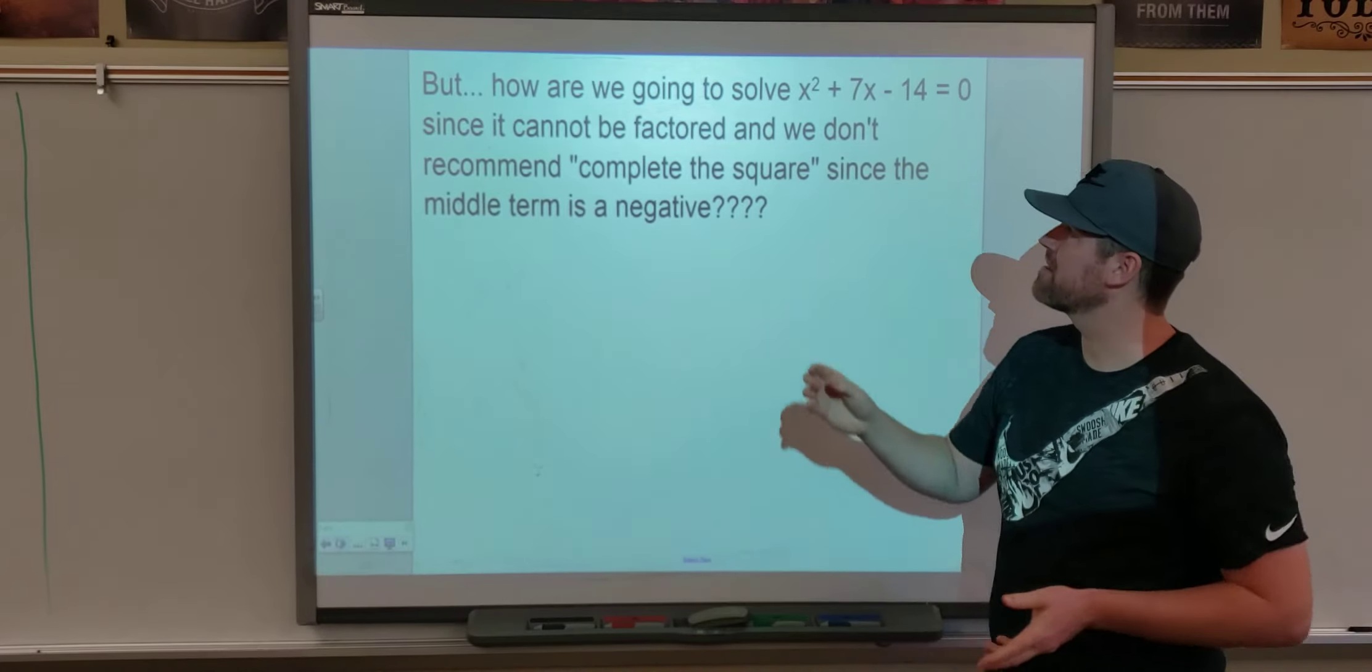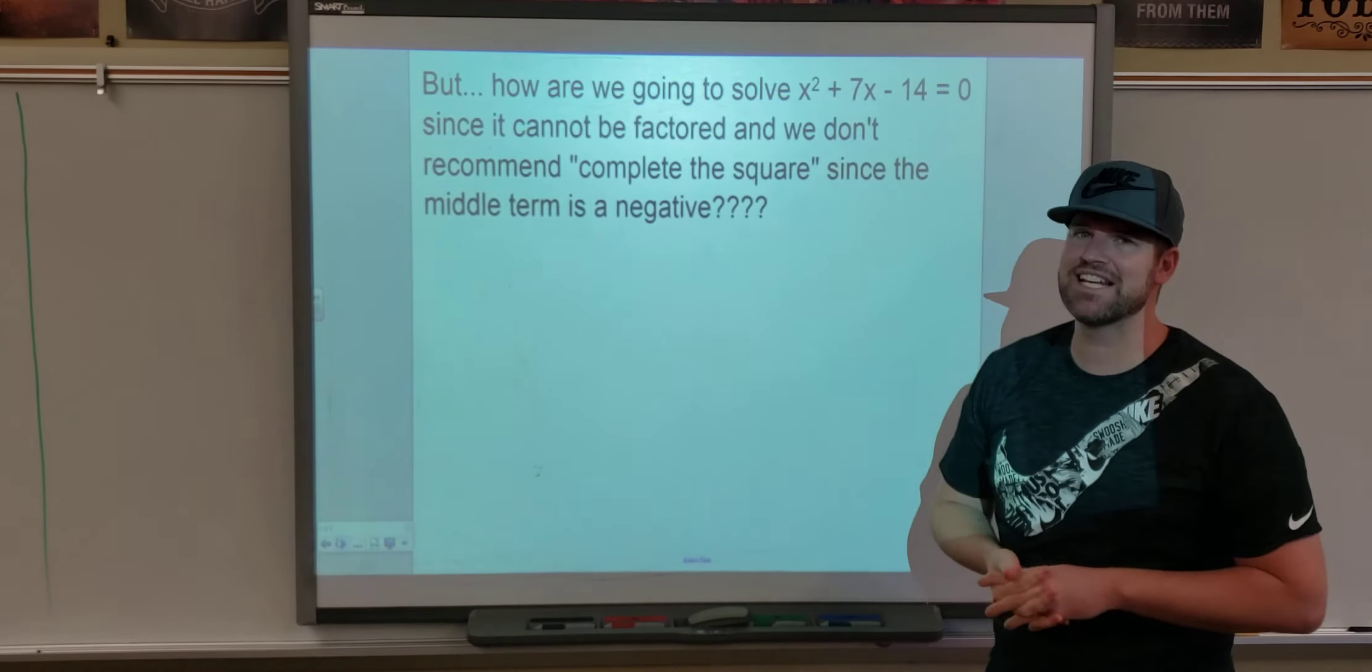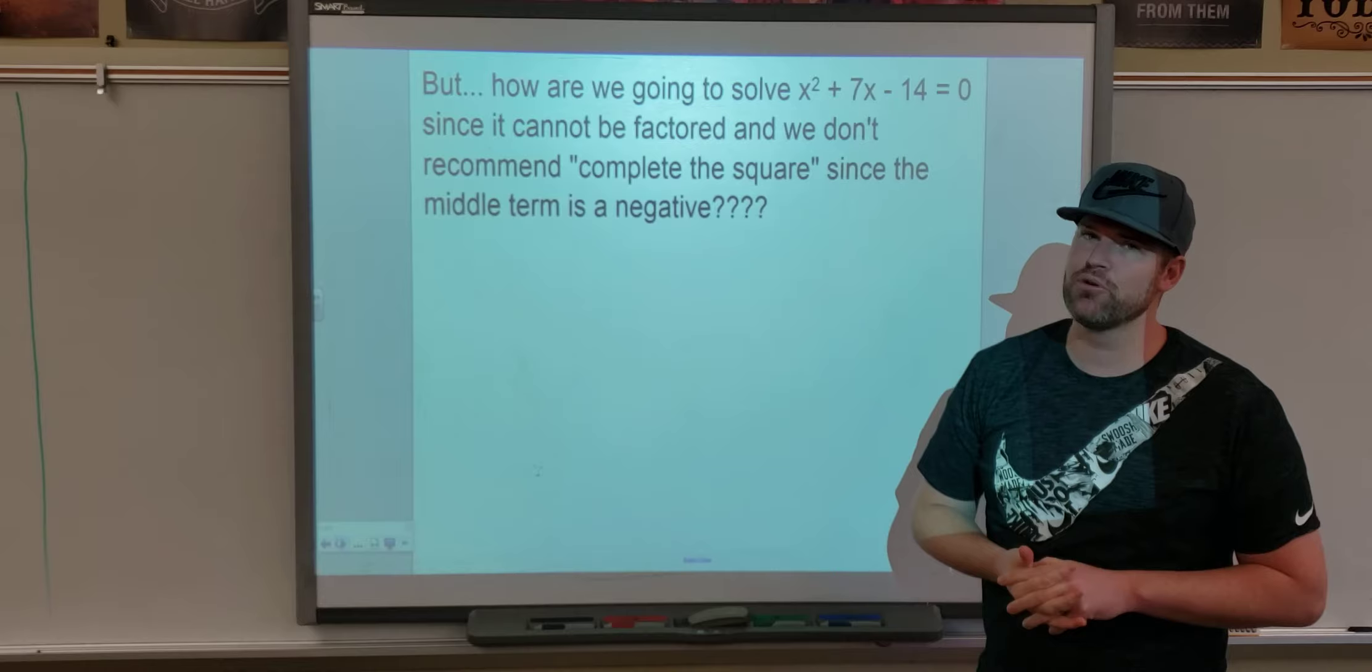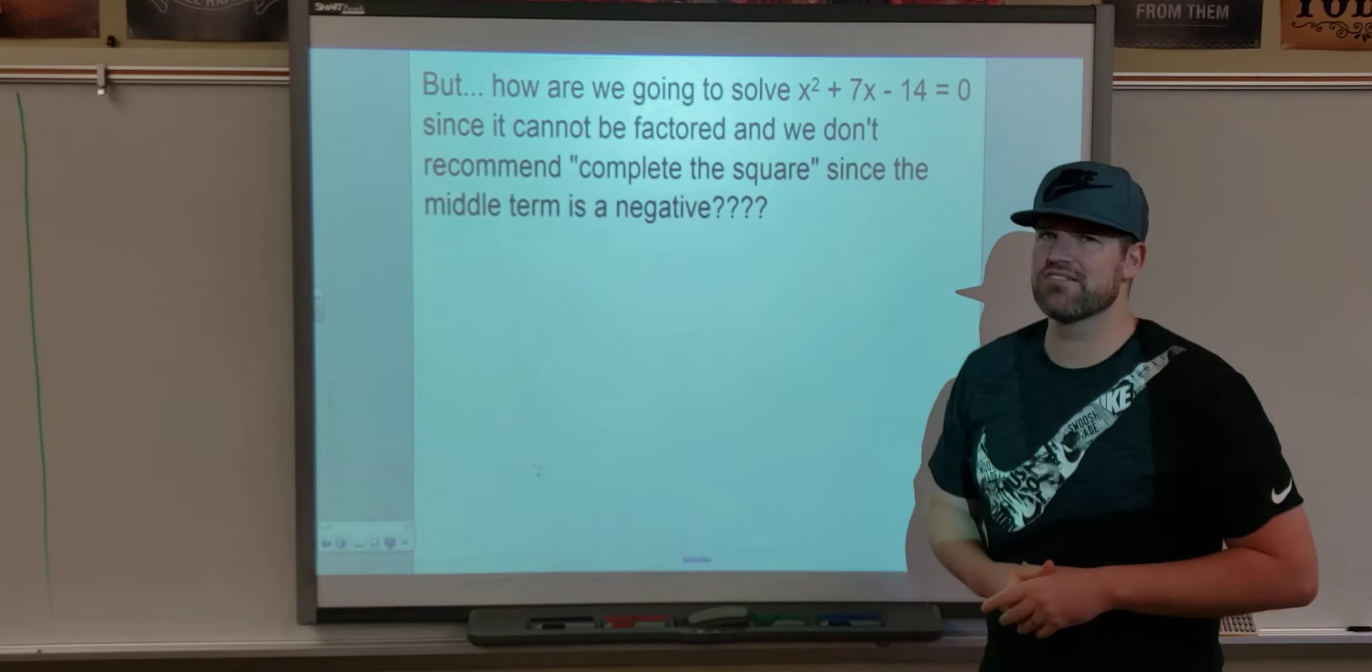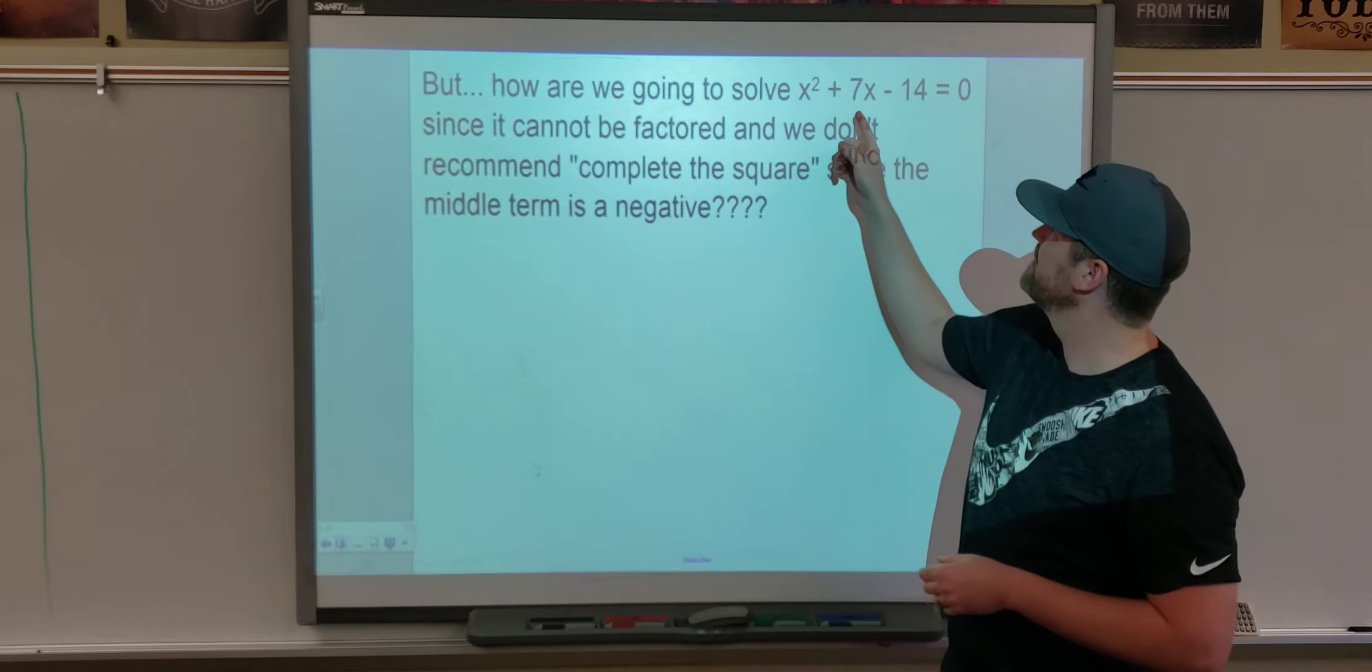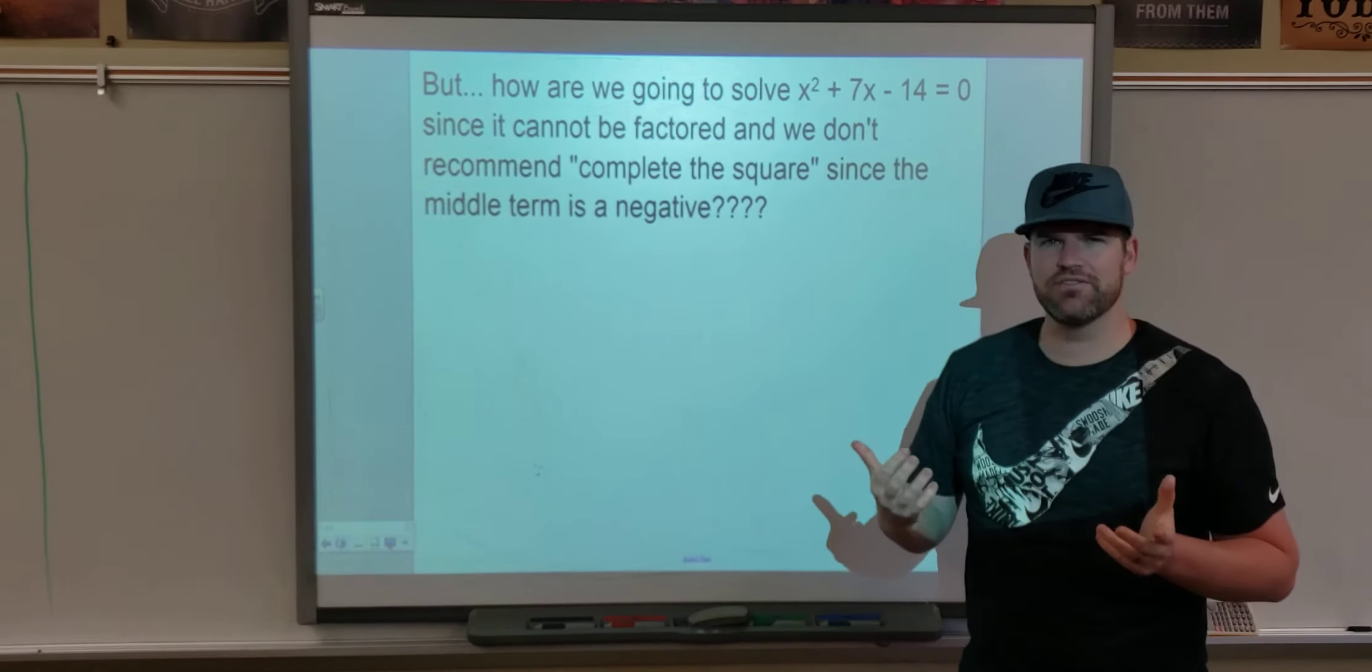So, how are we going to solve it? Because, if it can't be factored, because, trust me, if you factor this, it's not going to work. You can't multiply the negative 14 and add to 7. At least not with whole numbers. And, we just said, don't complete the square with that, because you have an odd b value. So, how are we going to solve this?